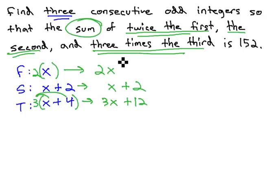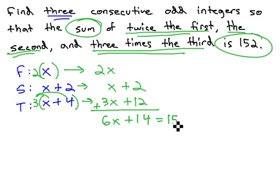And we want the sum of these terms. Sum means we'll add them together. 2x plus x plus 3x is 6x. 12 and 2 is 14, and this will be 152. This gives us an equation we can solve.